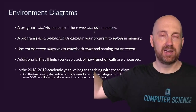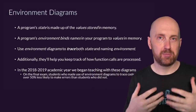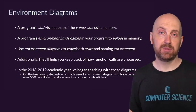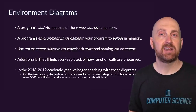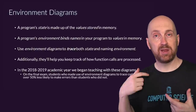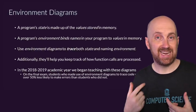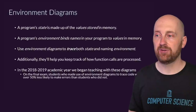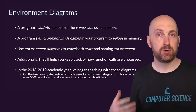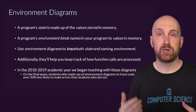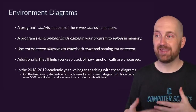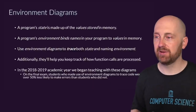Inside a program, the program has its own little environment too. The program's environment refers to the names that we have in our program and what they're bound to in memory, or what state they are bound to. So an environment diagram is going to trace both of these things — the state (all of our values) as well as the environment (the names and how they're bound to our values).